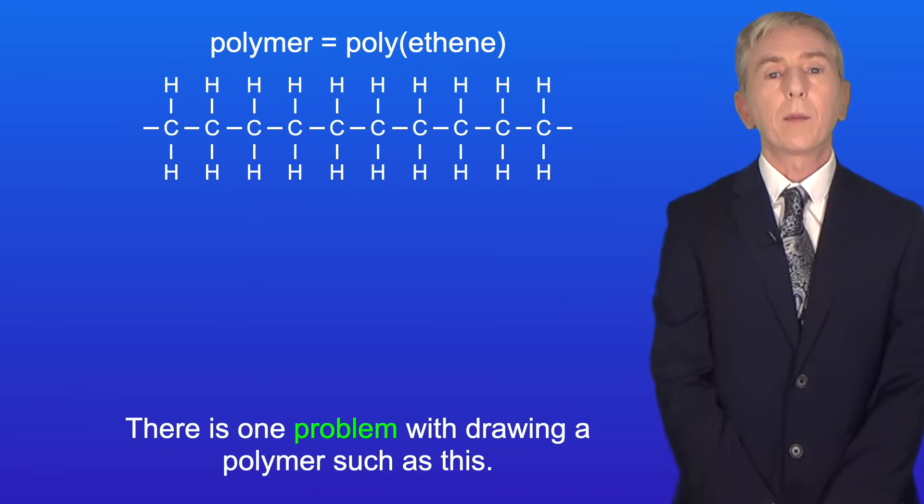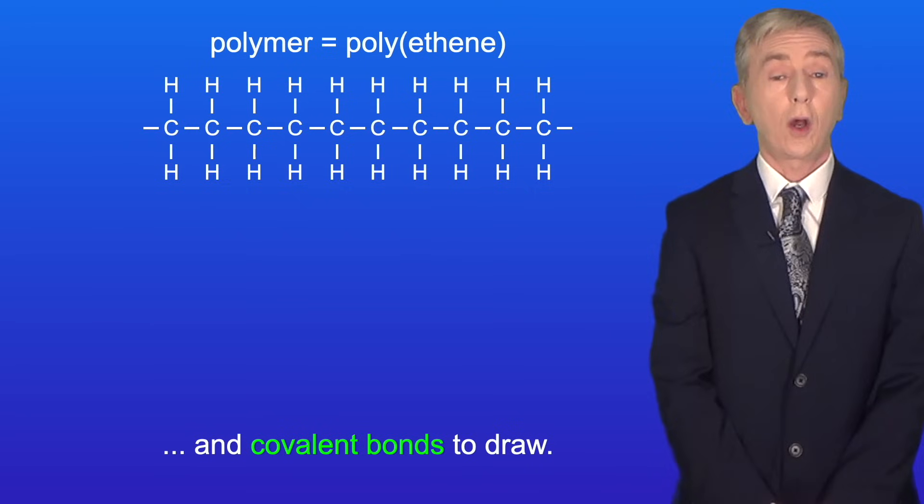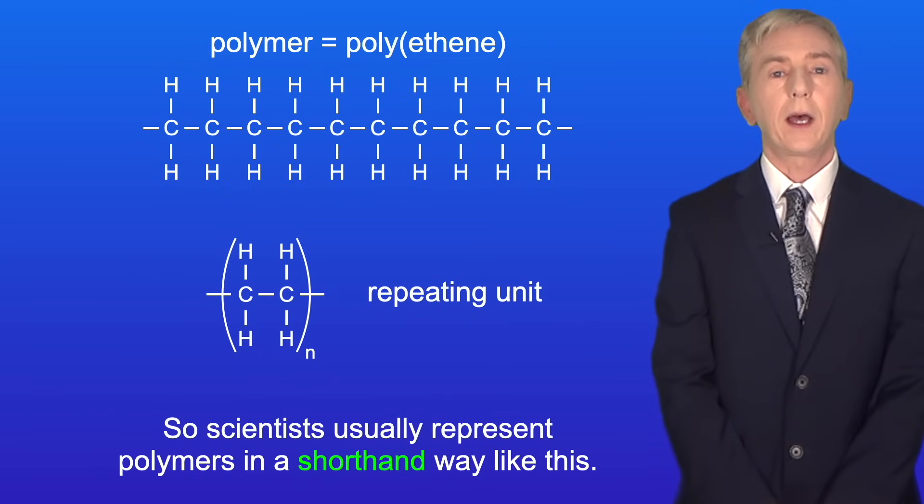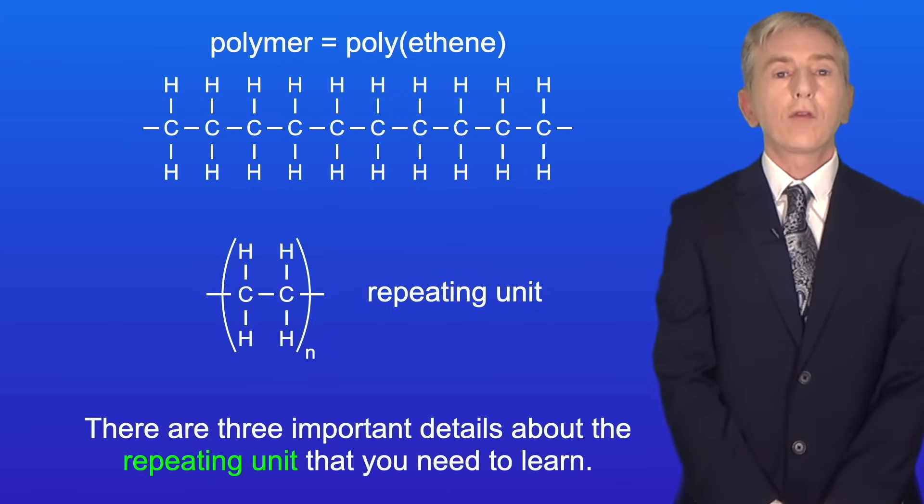Now there's one problem with drawing a polymer such as this and that is that there are lots of atoms and covalent bonds to draw. So scientists usually represent polymers in a shorthand way like this. This is called the repeating unit. There are three important details about the repeating unit that you need to learn.